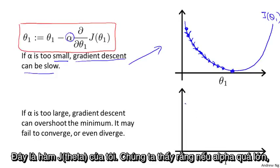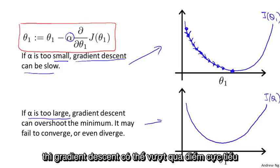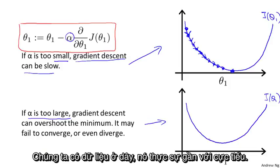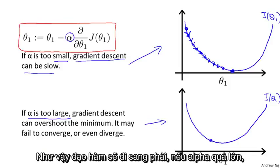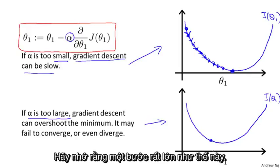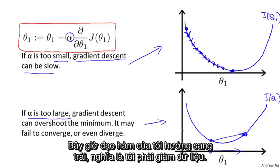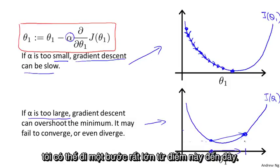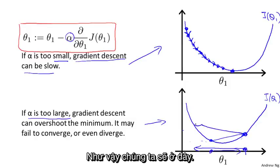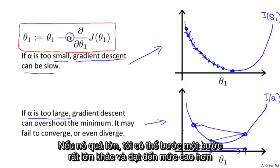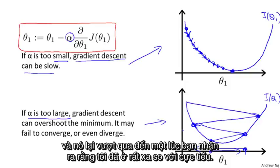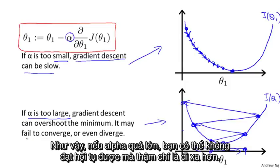If α is too large, then gradient descent can overshoot the minimum and may even fail to converge or diverge. Say I start off at a point pretty close to the minimum — the derivative points to the right, but if α is too big, I take a huge step and my cost function actually gets worse. Then the derivative points left, but again taking a huge step overshoots to the other side. I keep overshooting and actually get further and further from the minimum, so gradient descent fails to converge or even diverges.